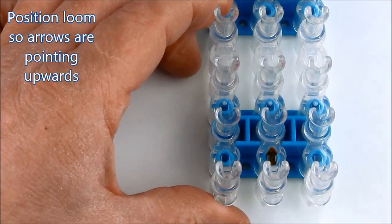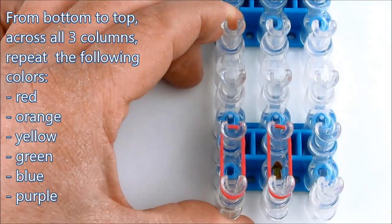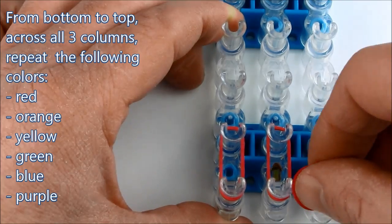From bottom to top, across all three columns, we place the elastics. And we will put them in the pattern of red, orange, yellow, green, blue and purple.